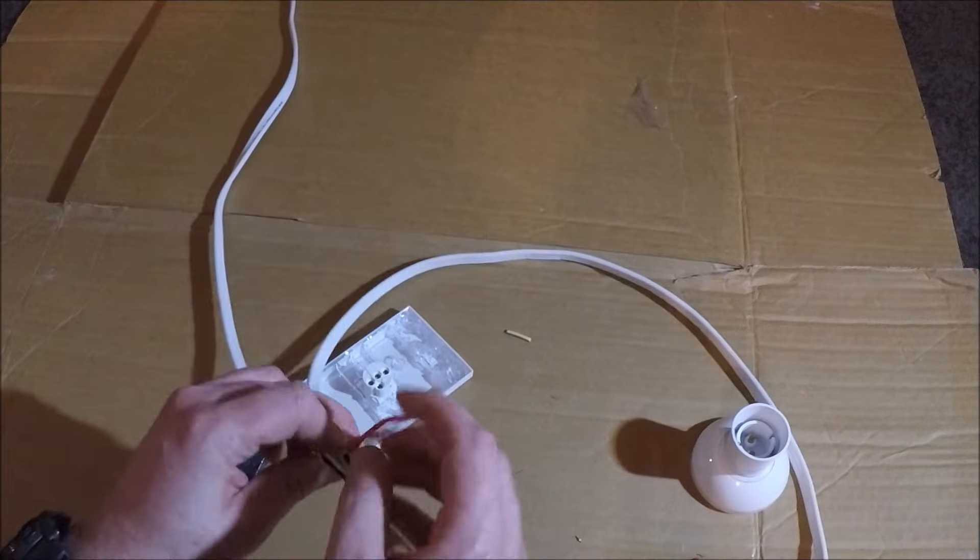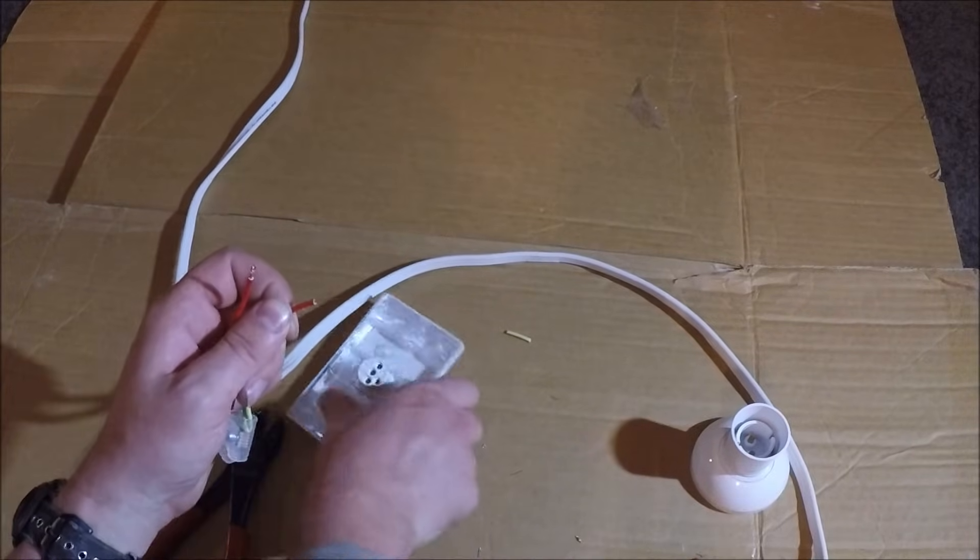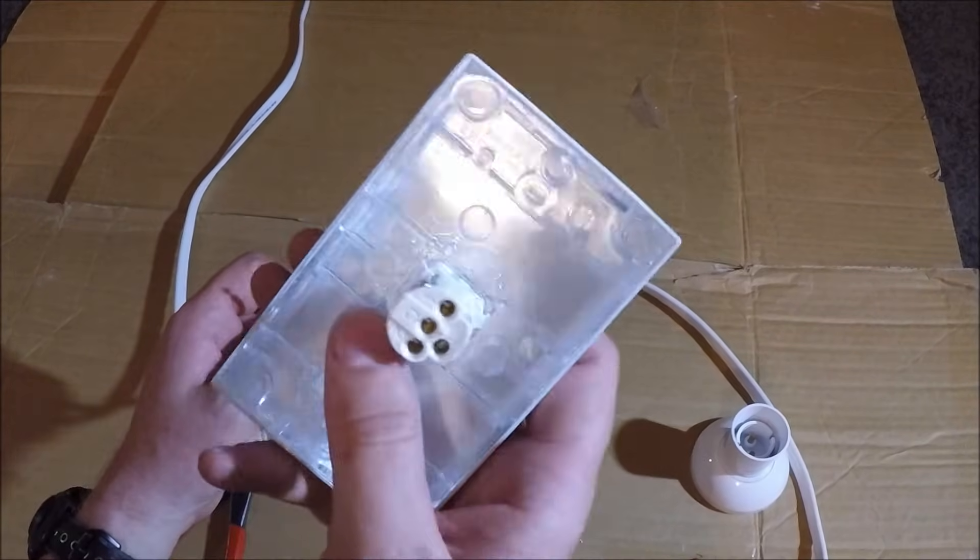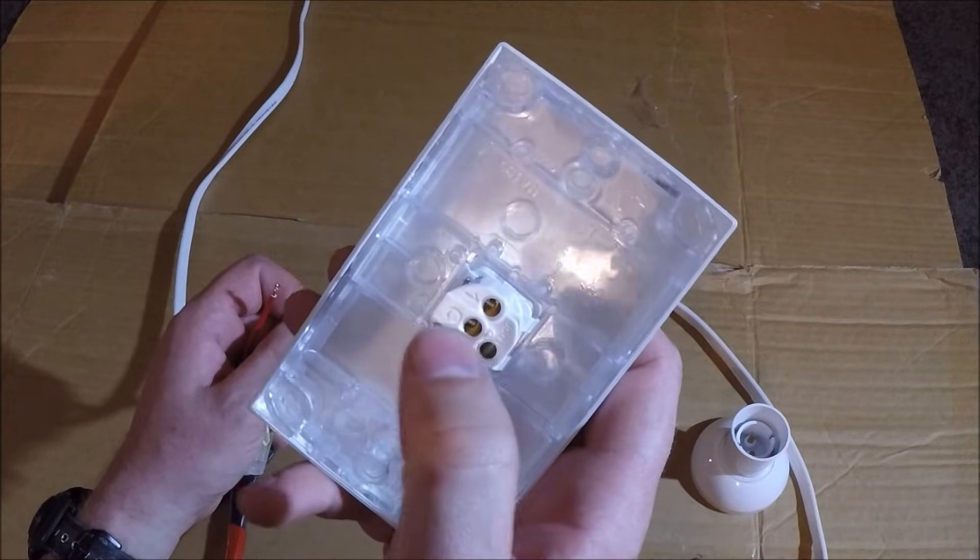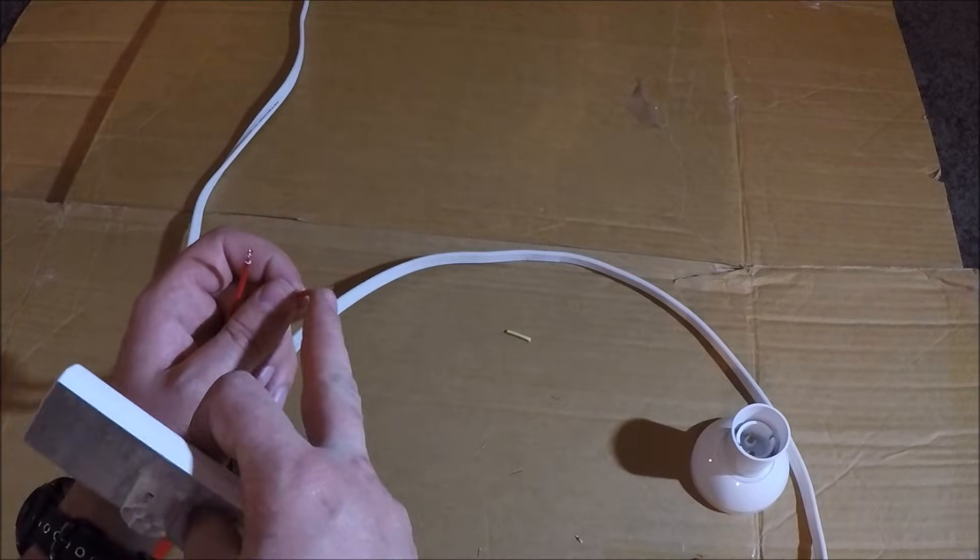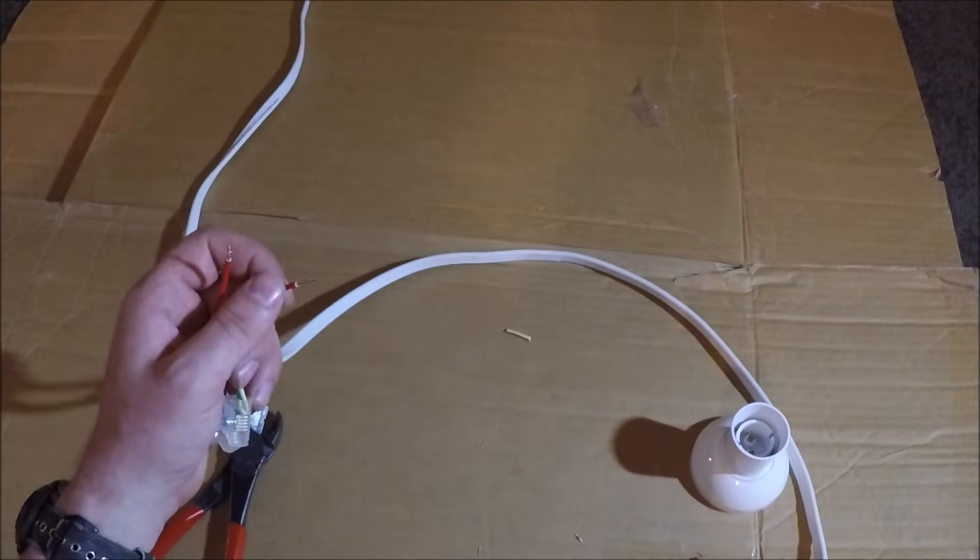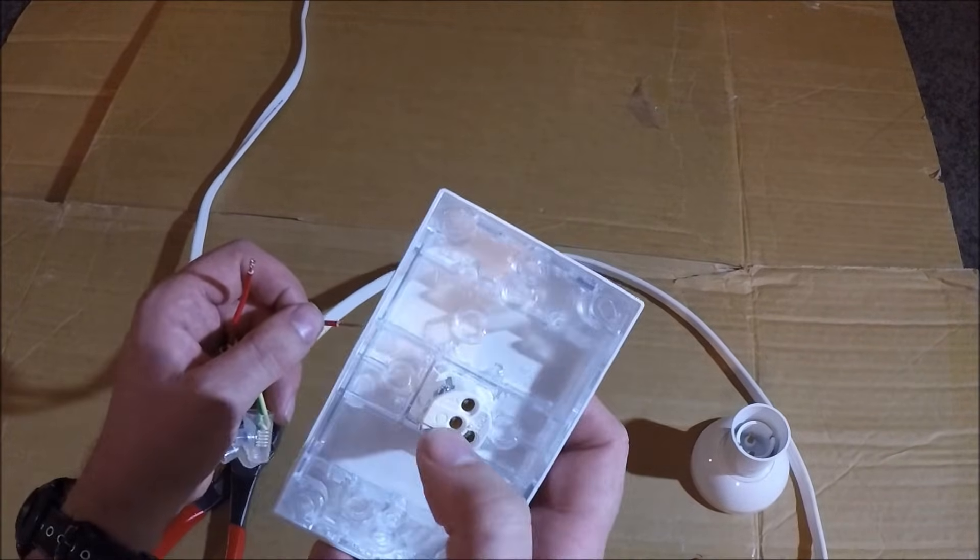So the next part is you've got your two cores here. This one here is from the switchboard. If you look on the back of the switch you'll have a one, a two and a C and a loop terminal. Now this one here as I said was from the switchboard so this one here we want to put into the C terminal in the middle here.